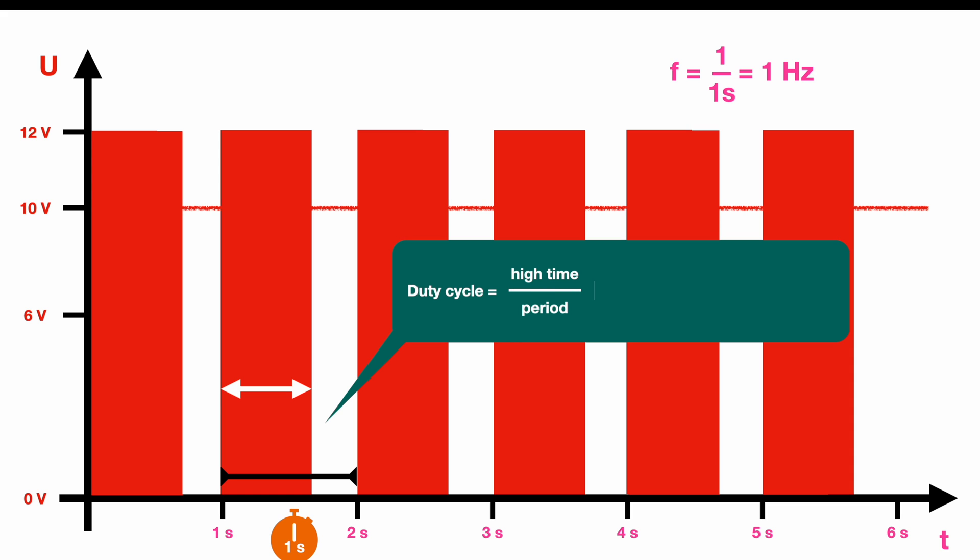So in our case we have a high time of 0.833 seconds roughly divided by the period time which is one second. So with 0.833 seconds we end up at 10 volts in average. So the duty cycle in this case would be 0.833 which we can also write down as 83 percent. So with a duty cycle of roughly 83 percent we end up at 10 volts.